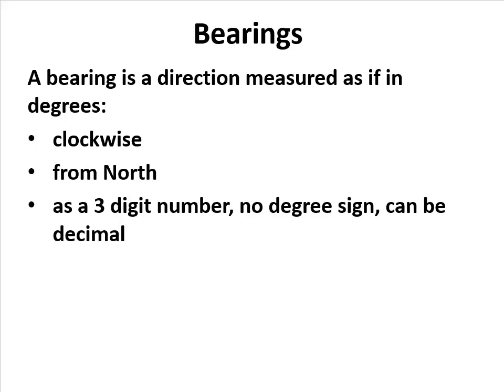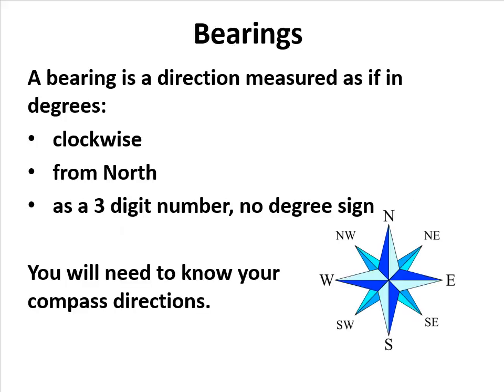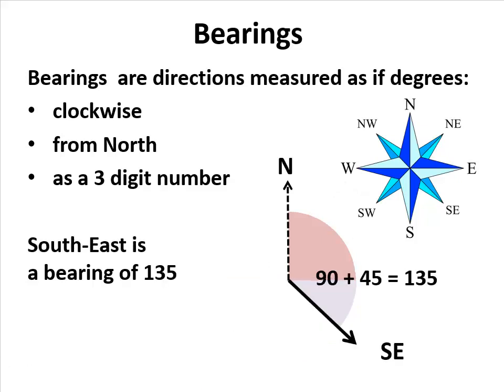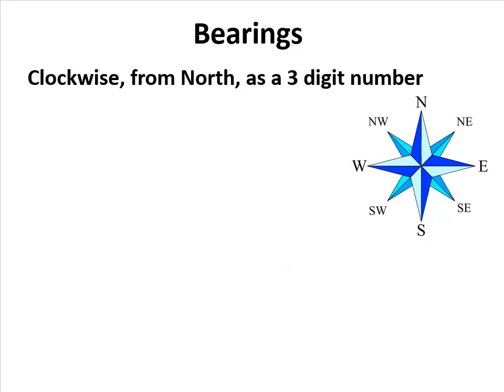So how does that work in practice? We need to know our compass directions because that's how we measure from north. Here's an example: due west, so heading directly west, is one to three lots of 90 degrees around from north, so it counts as a bearing of 270. Southeast is 90 degrees to get to east and 45 to get to southeast, so it is a bearing of 135. Bearings clockwise from north as a three-digit number.